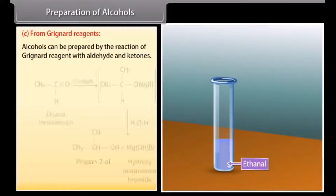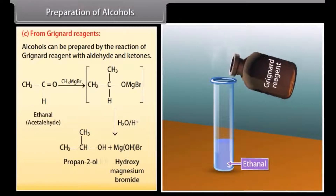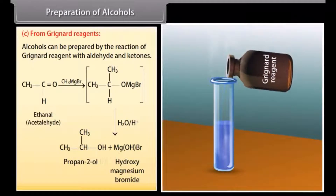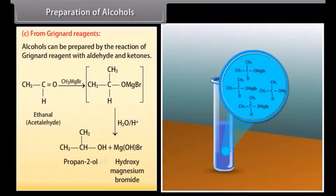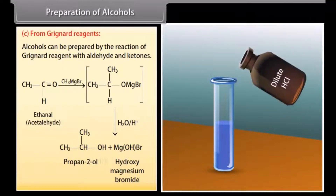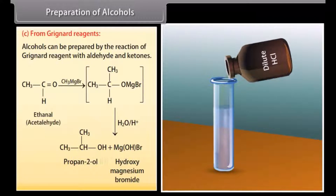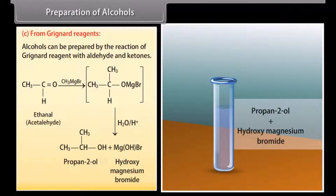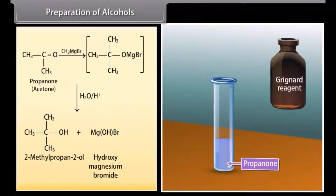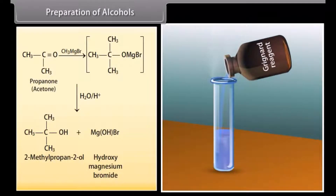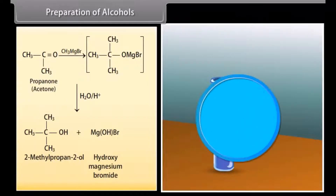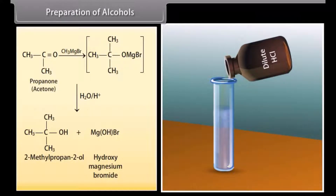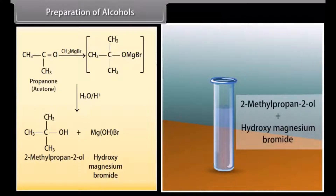Preparation of alcohols from Grignard reagents. Alcohols can be prepared by the reaction of a Grignard reagent with aldehydes and ketones. A Grignard reagent reacts with ethanal to form a product which, on decomposition with dilute HCl, gives propan-2-ol and hydroxymagnesium bromide. A Grignard reagent reacts with propanone to form a product which decomposes with dilute HCl to give 2-methylpropan-2-ol and hydroxymagnesium bromide.